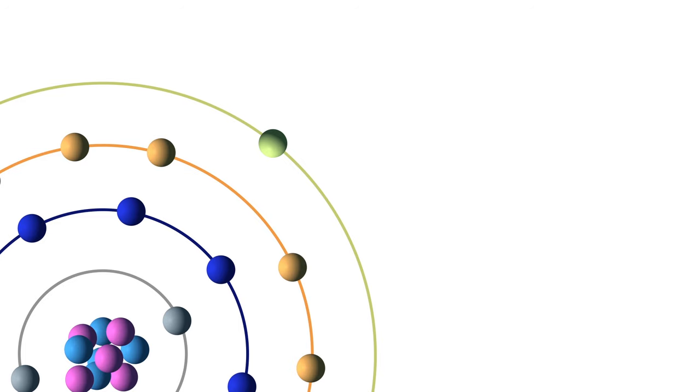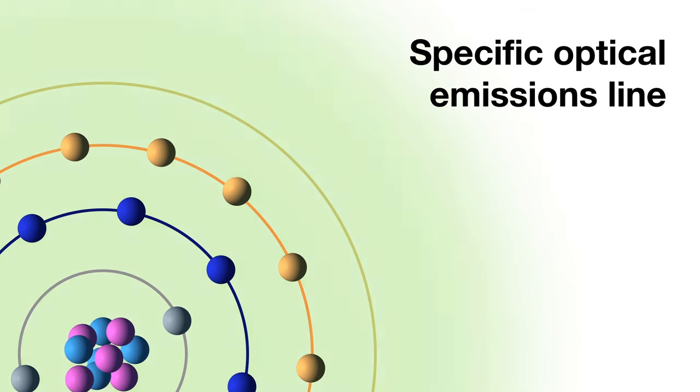Every element emits a series of spectral lines corresponding to the different electron transitions between the different energy levels or shells. Each transition produces a specific optical emission line with the fixed wavelengths or energy of radiation. For a typical metallic sample containing iron, manganese, chromium, nickel, vanadium etc., each element emits many wavelengths, leading to a line-rich spectrum.